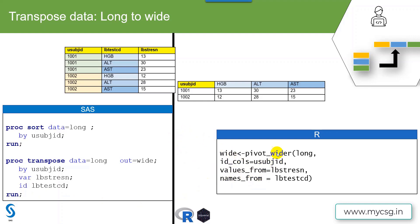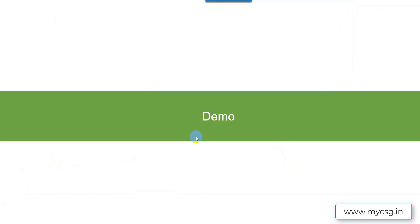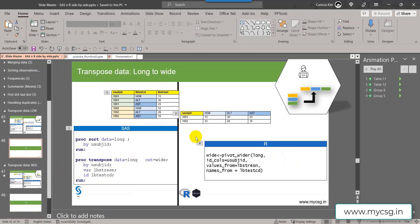This is how we can use pivot_wider to get the same result achievable using proc transpose — converting data from long to wide format. pivot_wider is used for transposing long data to wider data. Let us now see the demo of this.